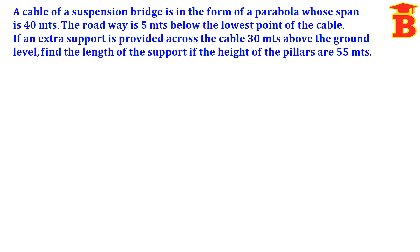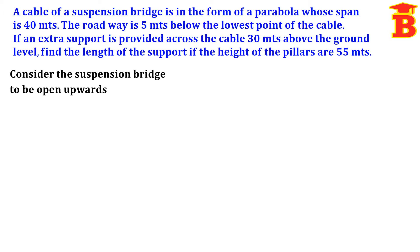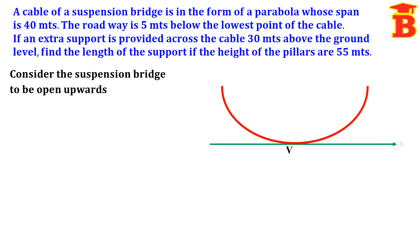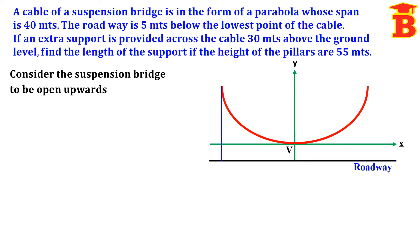First we have to draw the diagram, mark all the points, and then we can do the sum very easily. Consider the suspension bridge to be open upwards — this is the parabola shape, open upwards. The lowest point is the vertex. For this vertex, we draw the x-axis and y-axis. The bottom line is the roadway. At both corners of the parabola we have the pillars.